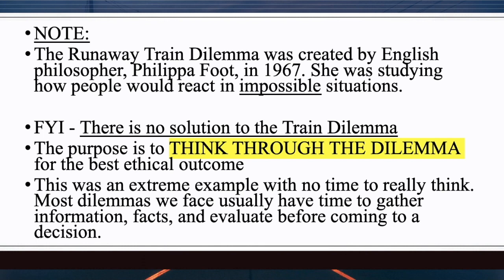The Runaway Train Dilemma was created by English philosopher Philippa Foot in 1967. She was studying how people would react to an impossible situation. The underlying point is important: there is no solution to the train dilemma. We walked through it, and the whole point was to get you to think through the dilemma — but there is no solution. No matter what you picked, either the five are going to die or the two are going to die. The point is that you thought through the dilemma for the best ethical outcome.